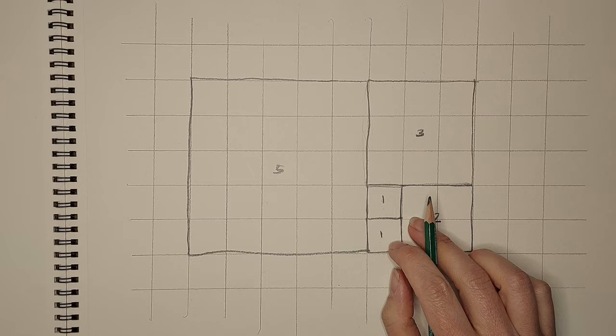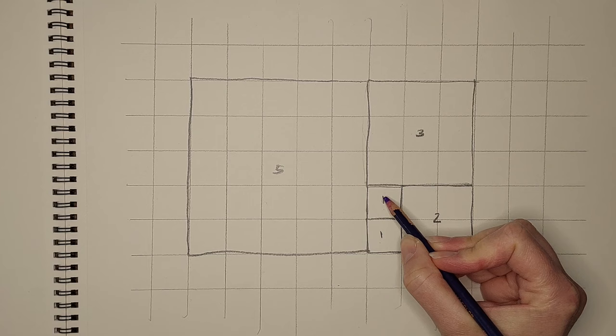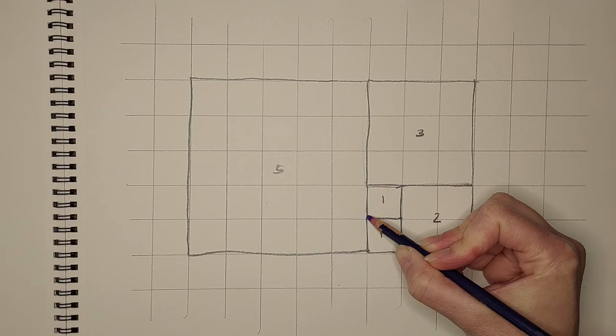So now this next part we're going to freehand a little bit. And what we're going to do is we are going to start in our first square and we are going to start with this corner here and make our way to this corner here.